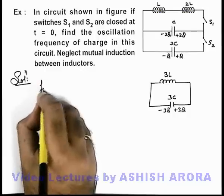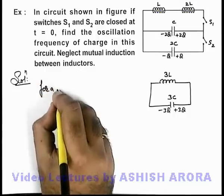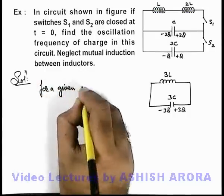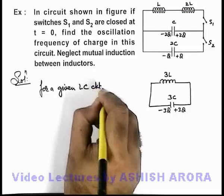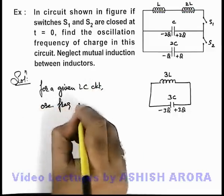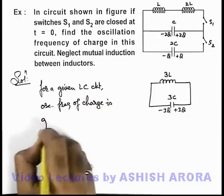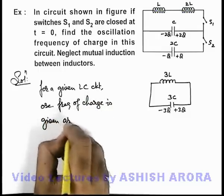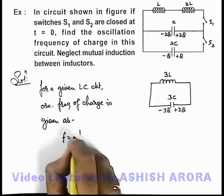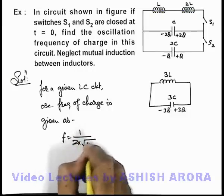For a given LC circuit, the oscillation frequency of charge is given as f = 1/(2π√LC).